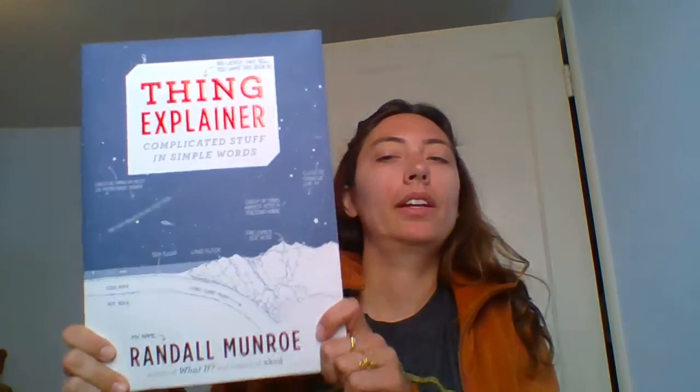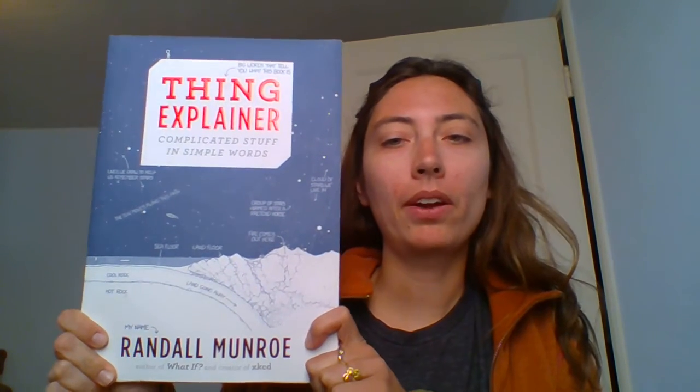Hi, Nerd Mom here. Today I am going to be reviewing a book. This book is called Thing Explainer, Complicated Stuff in Simple Words, and it's written and illustrated by Randall Munroe, who also does the webcomic XKCD.